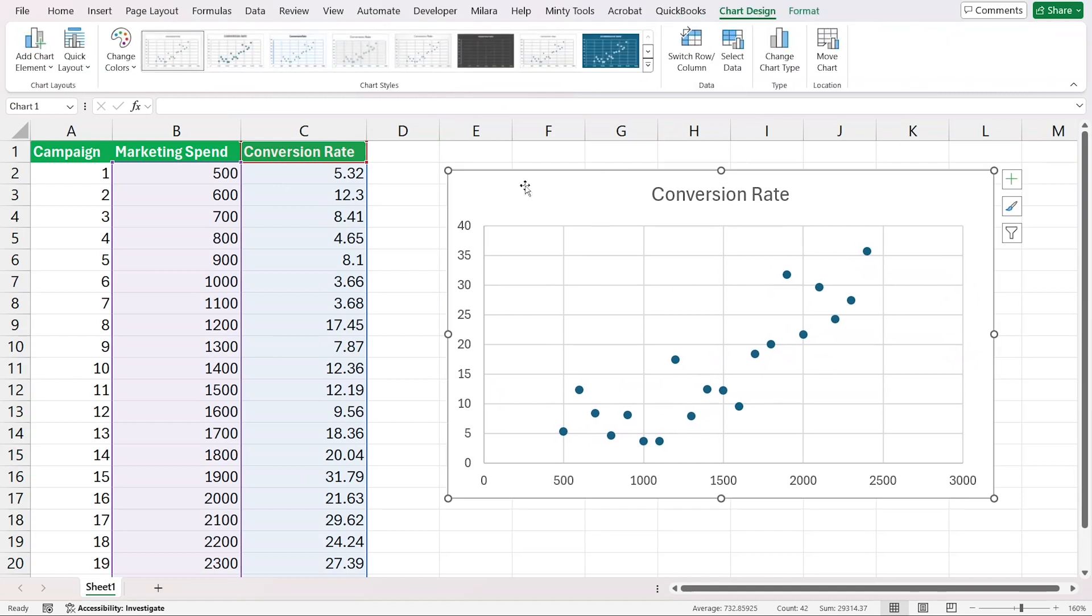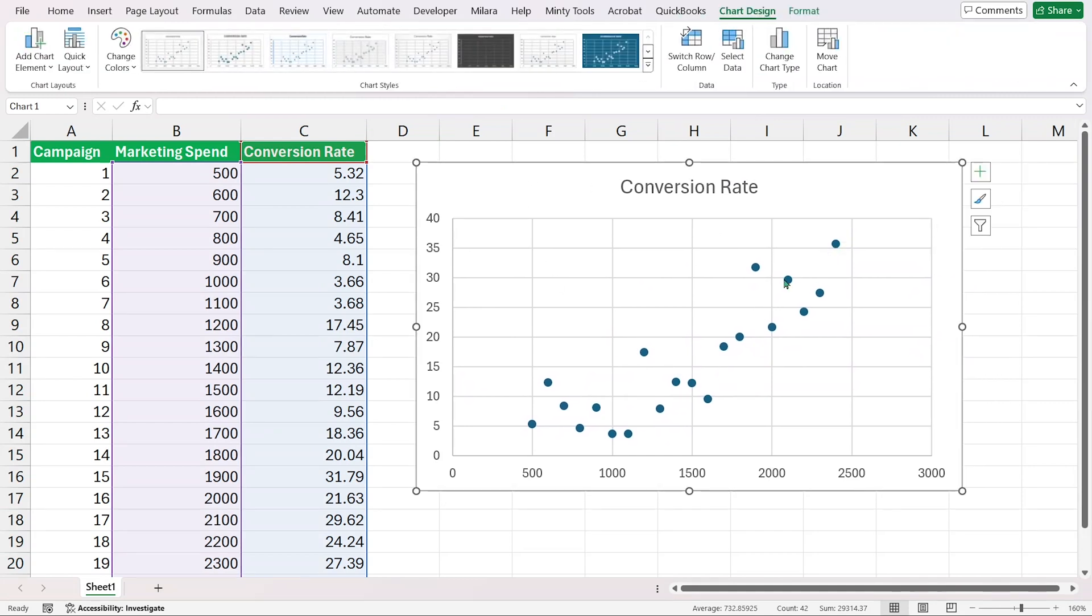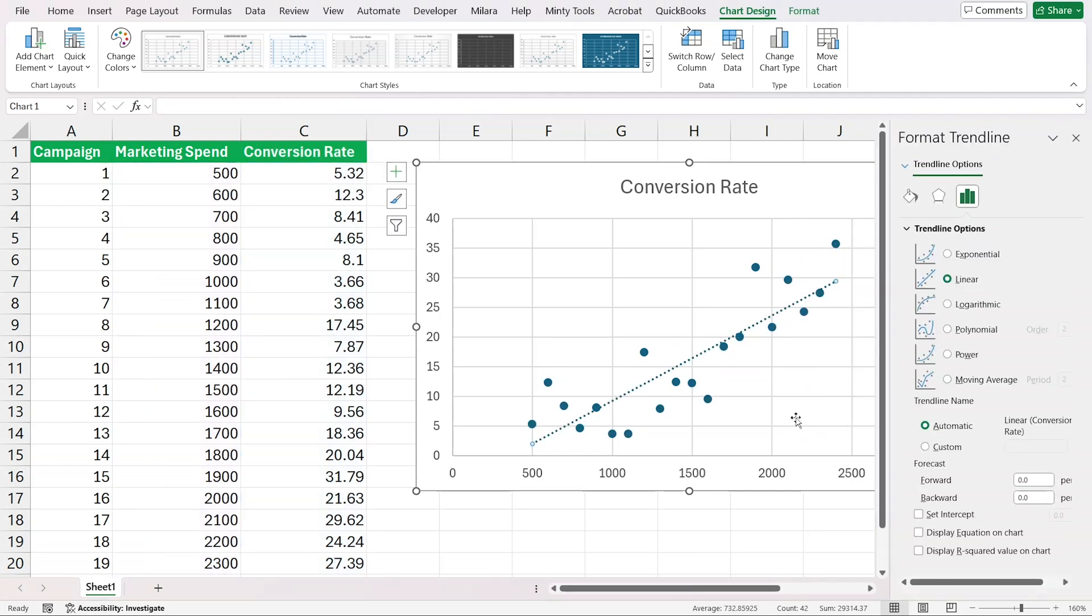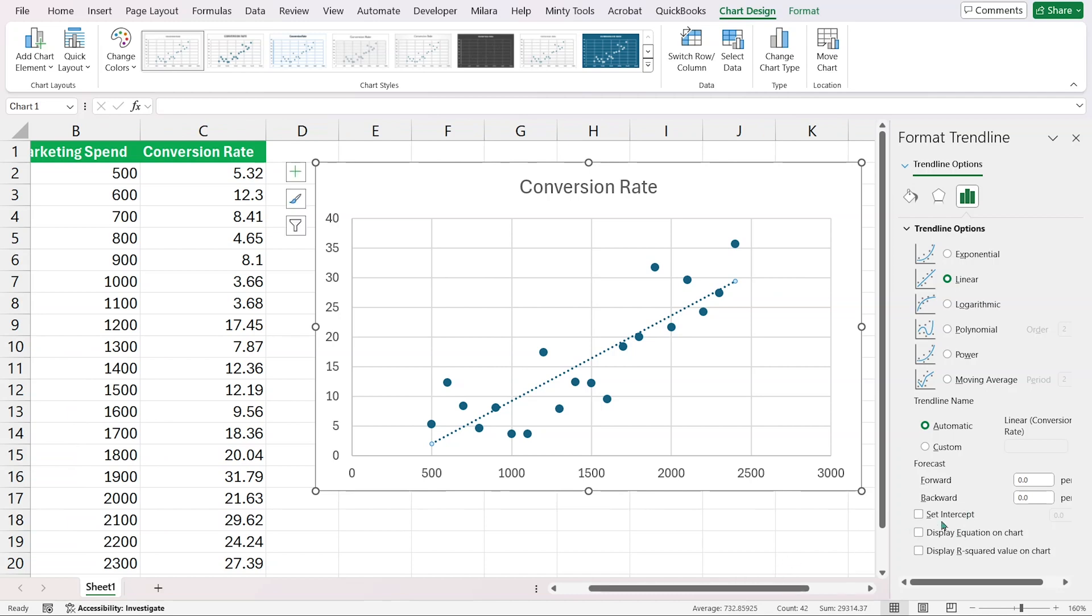Here we have our conversion rate and those are our data points. I'm going to right click on the series and add a trend line. Let's go with the linear trend line. You see that this is how this line fits our data set.